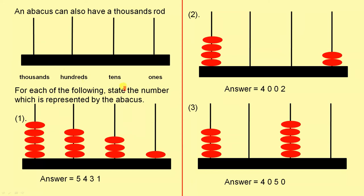For each of the following, state the number which is represented by the abacus. So in the thousands rod, we have 5 of those there, 1, 2, 3, 4, 5. In the hundreds rods, we have 1, 2, 3, 4. In the tens rod, we have 1, 2, 3. And in the ones rod, we have 1. So it's 5,431.